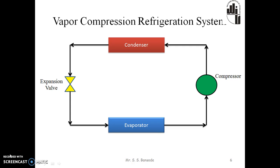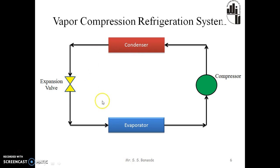During condensation, the refrigerant rejects heat to an external system like cooling water or to the atmosphere, and the refrigerant converts from vapor to liquid. As you can see in the schematic diagram of a vapor compression refrigeration system, the system mainly consists of a refrigerant compressor, a condenser, a refrigerant control valve called the expansion valve, and an evaporator.